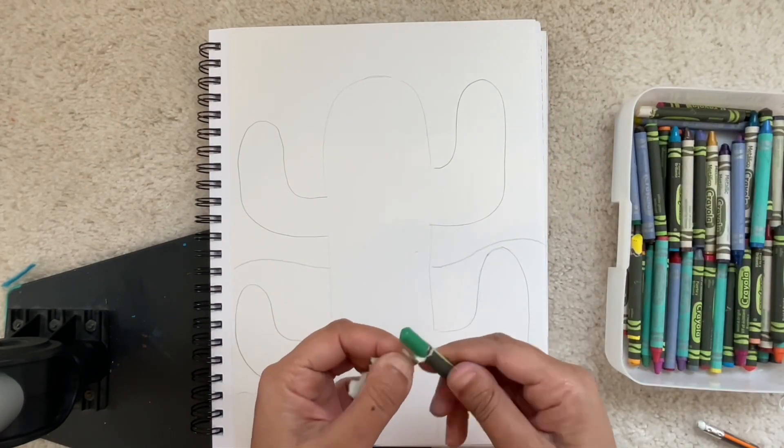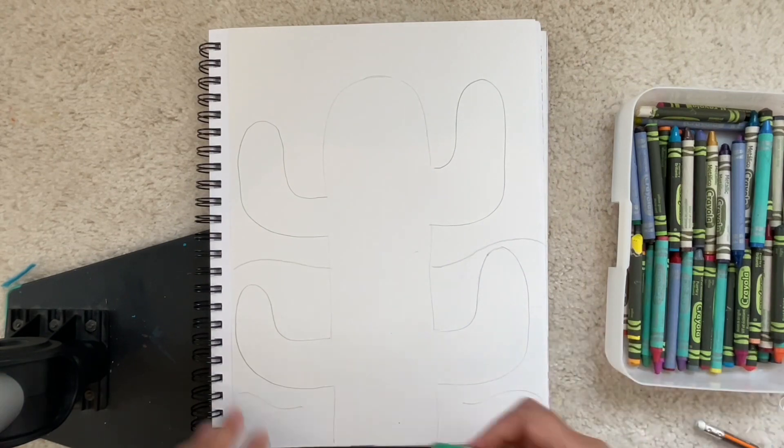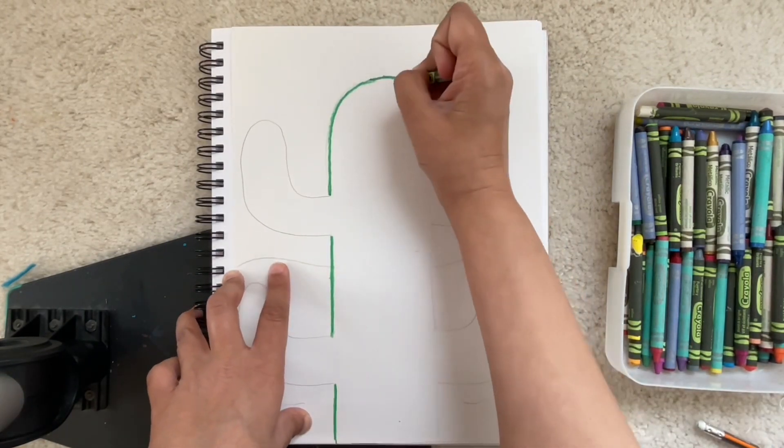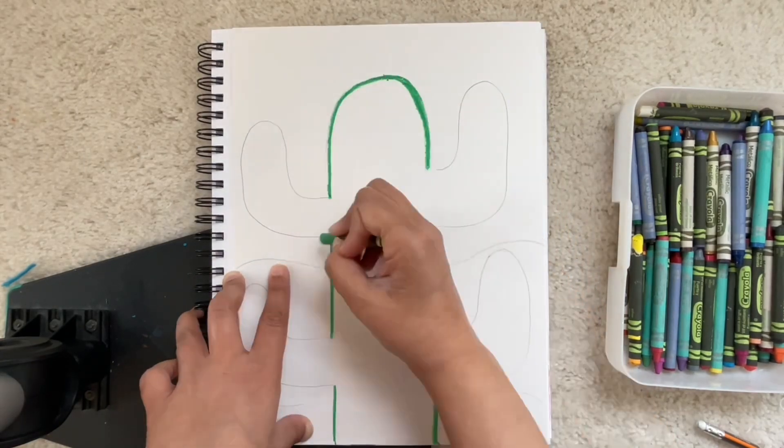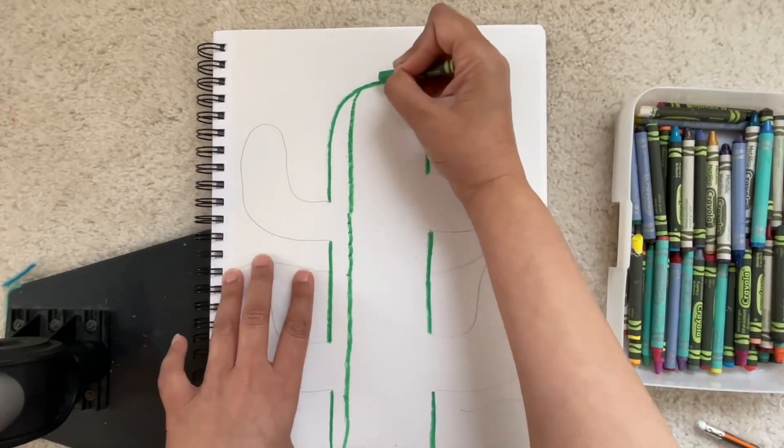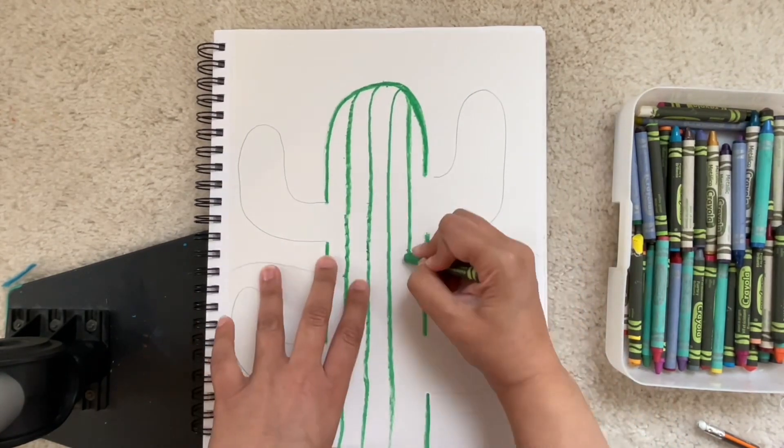Then you will get a green crayon and you will outline your cactus. So the big part of this art project is the value which is the shading and the straight and curved lines that we're drawing for this cactus.